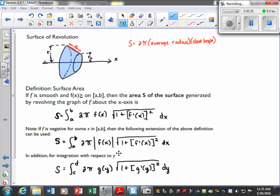The textbook mentions here that if f is negative for some x in the given interval, then you can just take the absolute value, and it's just an extension of the previous one. We also want to have integration with respect to y, so it's 2π, g(y), and then all the variables change, and of course the intervals change to y variables as well. So basically we're just given this definition of surface area.